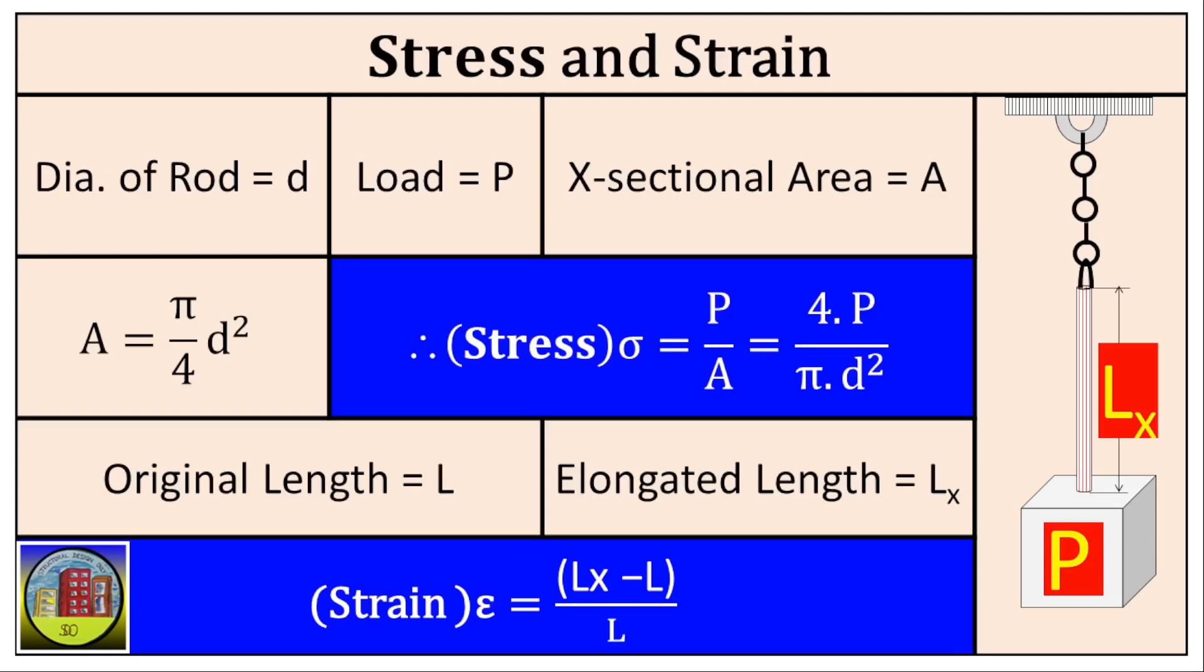Stress - imagine you're trying to pull or push on a material, like stretching a rod. The stress is the intensity of that force you're applying. Say load on the rod is P, diameter of the rod is equal to d, therefore cross-sectional area of the rod equals to pi by 4 into d square. Therefore stress on rod will be equals to 4 into P by pi into d square.